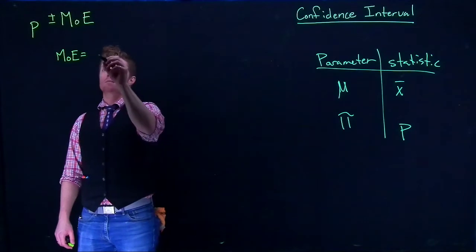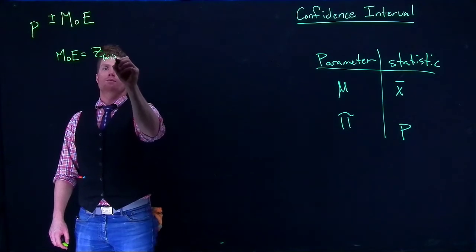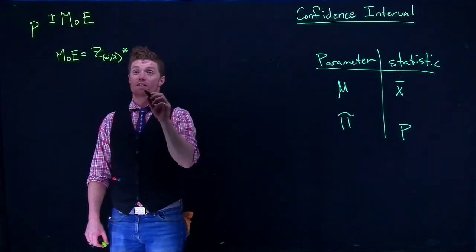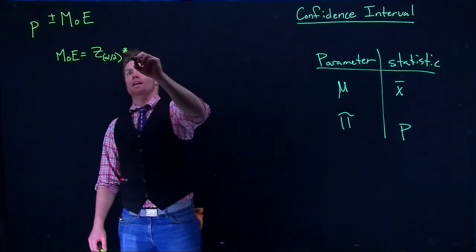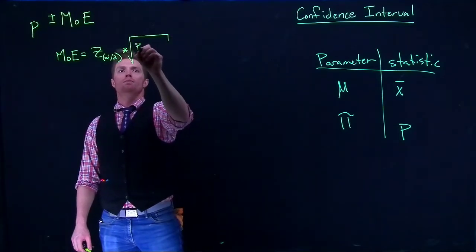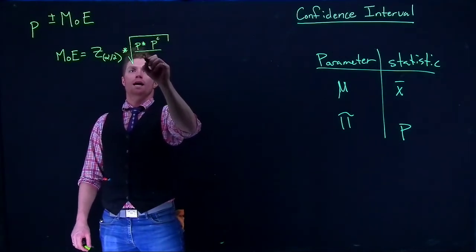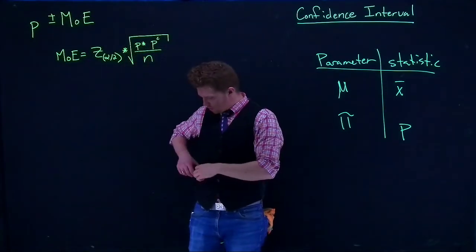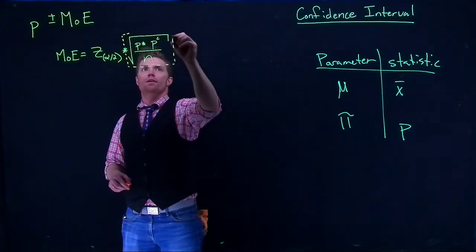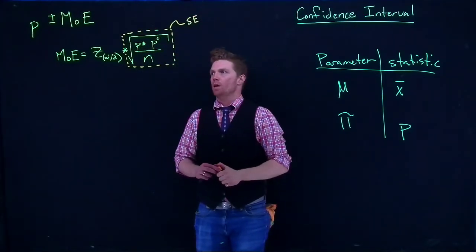The margin of error is very simply when we're doing a two-tailed test—we'll do a one-tailed test in just a second—but for two-tailed, this is going to be Z alpha divided by 2 multiplied by our standard error. Now our standard error here is the square root of P times P complement divided by N.